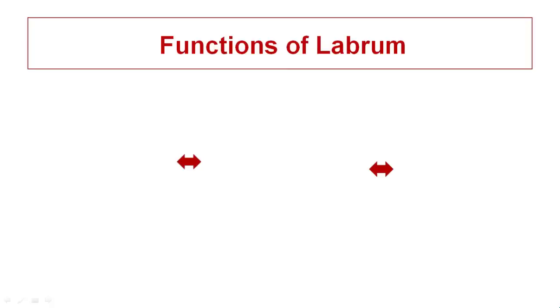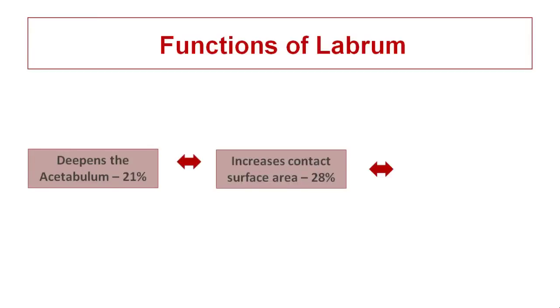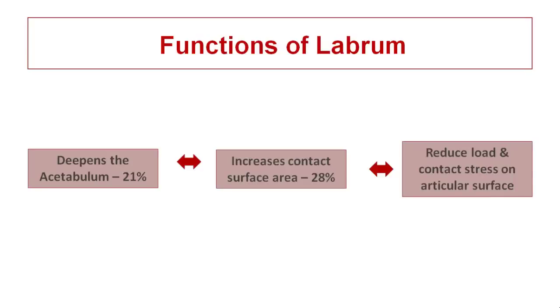What are the functions of the labrum? It has many functions including shock absorption, joint lubrication, and pressure distribution. It deepens the acetabulum by nearly 21 percent, increases contact surface area, and reduces load and strain on the articular surface. It protects the articular surface from wear and tear, and there is evidence that labral damage could eventually lead to early osteoarthritis.